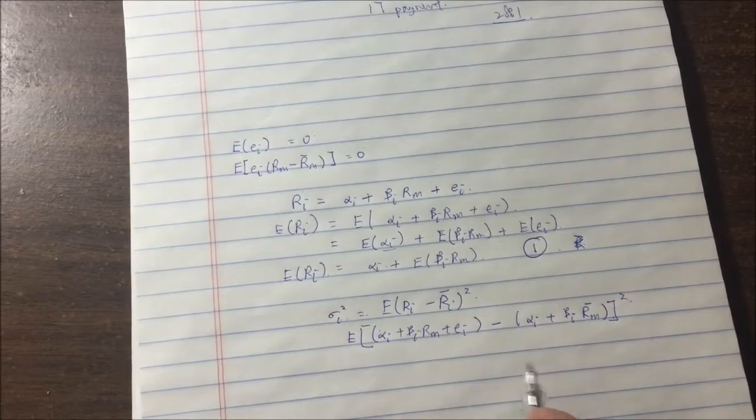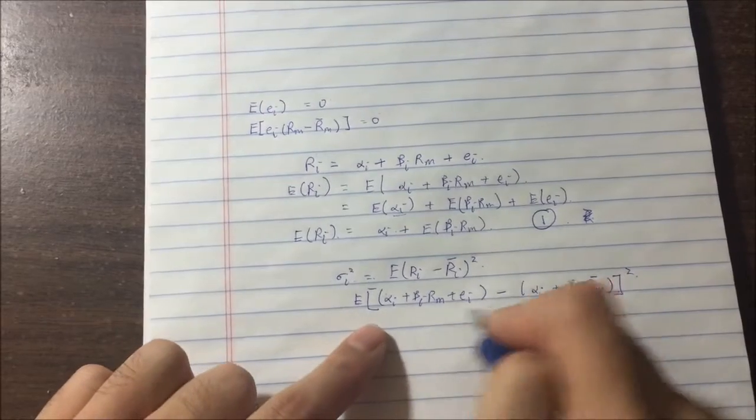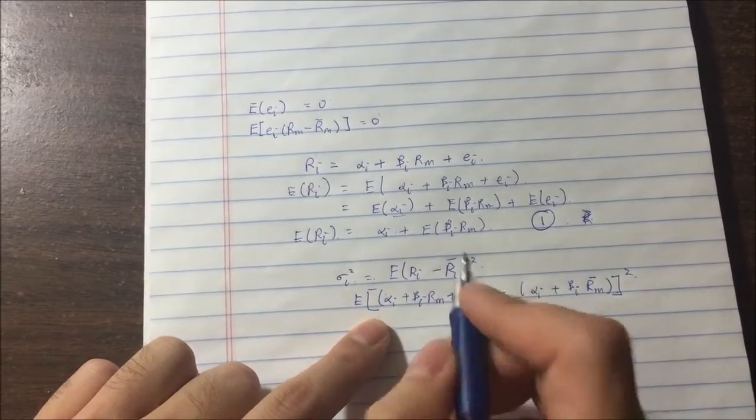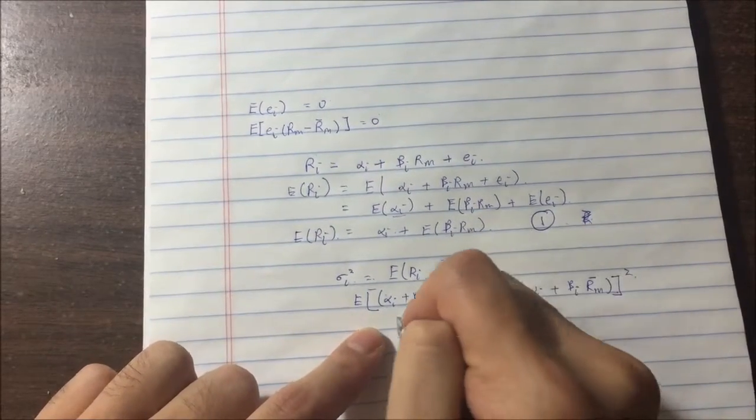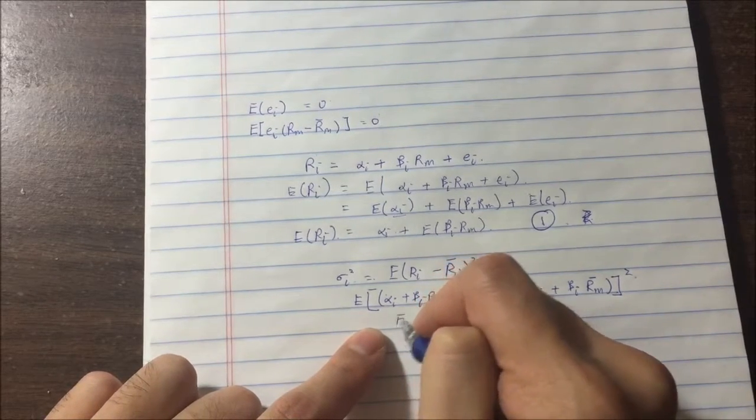And we do some algebra here. The alpha cancel out. So we are left with, let's see, expected return of beta(RM - R̄M) and this is the unknown term, whole thing squared.